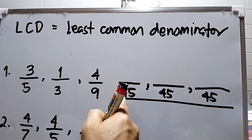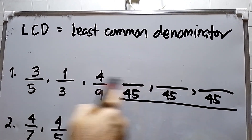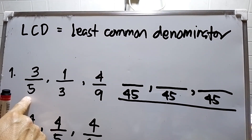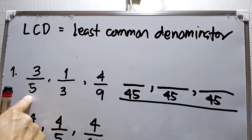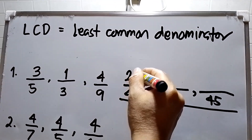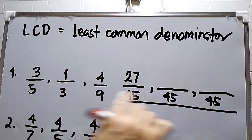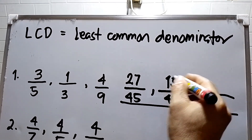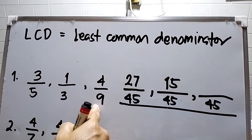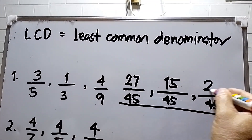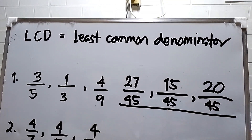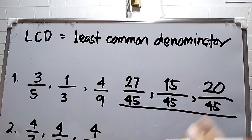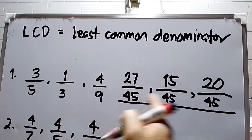We need to divide the LCD by each denominator and then multiply the numerators. 45 divided by 5 is 9, times 3 is 27. Next, 45 divided by 3 is 15, times 1 is 15. Next, 45 divided by 9 is 5, times 4 is 20. So we have the similar fractions: 27 over 45, 15 over 45, and 20 over 45 — all denominators are the same, which is 45.